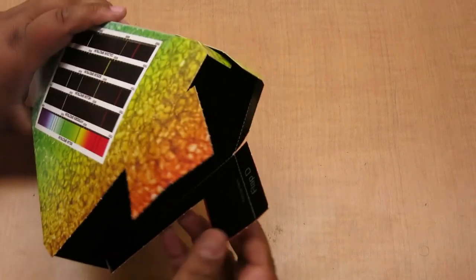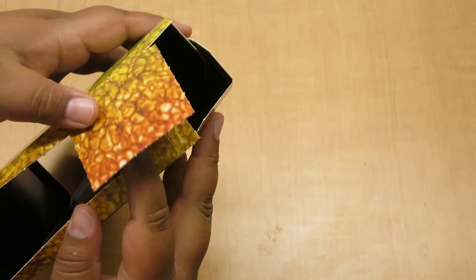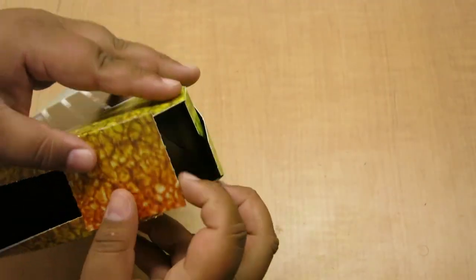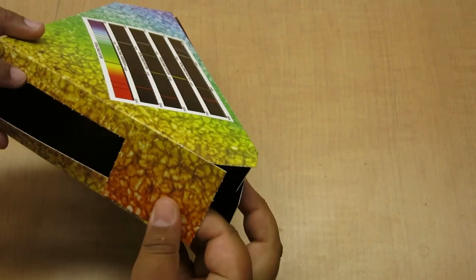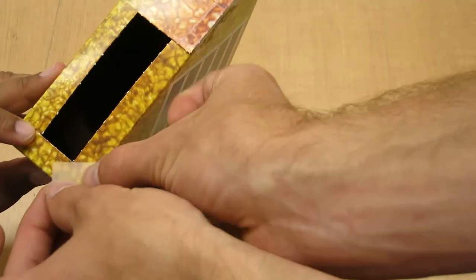Next, we'll form this side of the spectroscope where the scale will go. Fold flap C down over flap D. Then hold the spectroscope aligned carefully while you tape these edges and these corners.